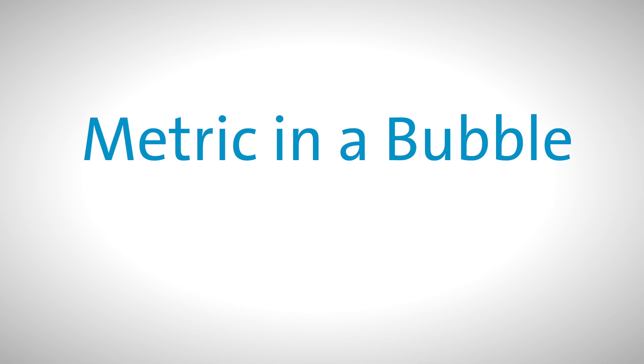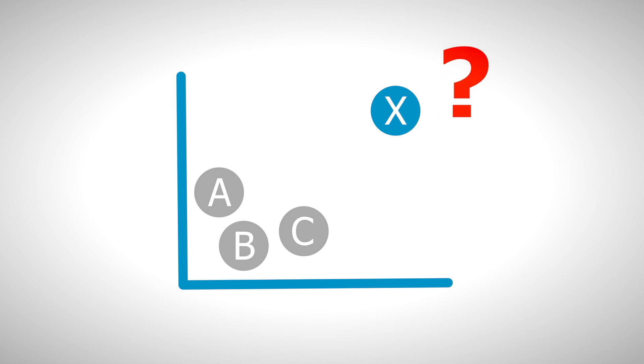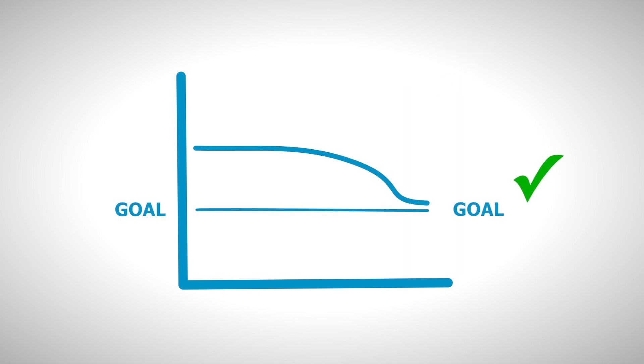Unfortunately this metric in a bubble does not provide us with any context. A context can be added by comparing System X with System A, B and C or by tracking the metric over a period of time. In both cases the context will tell us whether there's a problem or whether we're on the right track.